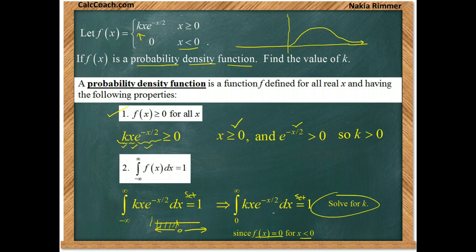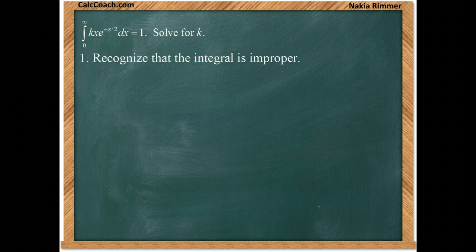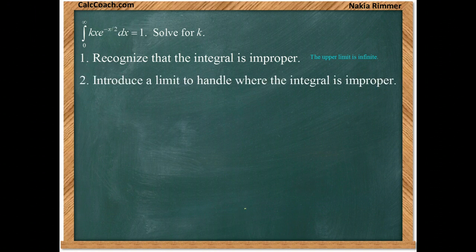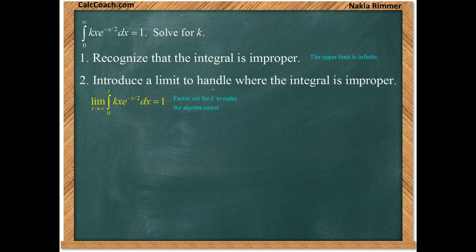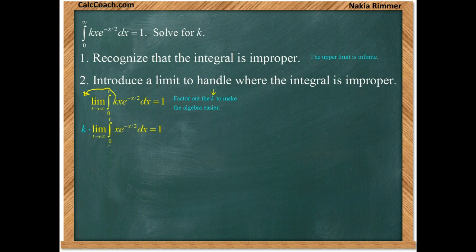Our job is to find the k that makes this integral equal to 1. This is an improper integral because the upper limit is infinity. When you have an improper integral, you immediately introduce a limit — let t go to infinity and integrate from 0 to t. To make our life easier, pull k out of the integral and even out of the limit, since it's a constant.